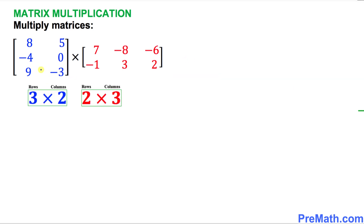Let's focus on the left hand side blue matrix. As you can see, this has three rows and two columns, so we call it a three by two matrix. On the right hand side, the red matrix has two rows and three columns.